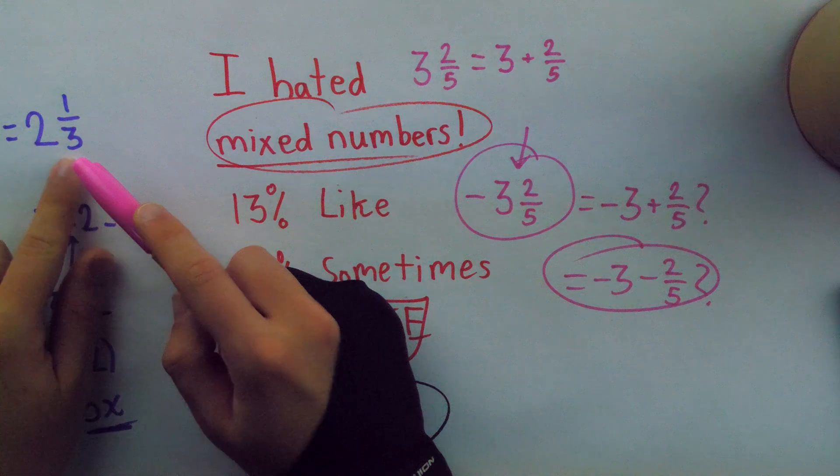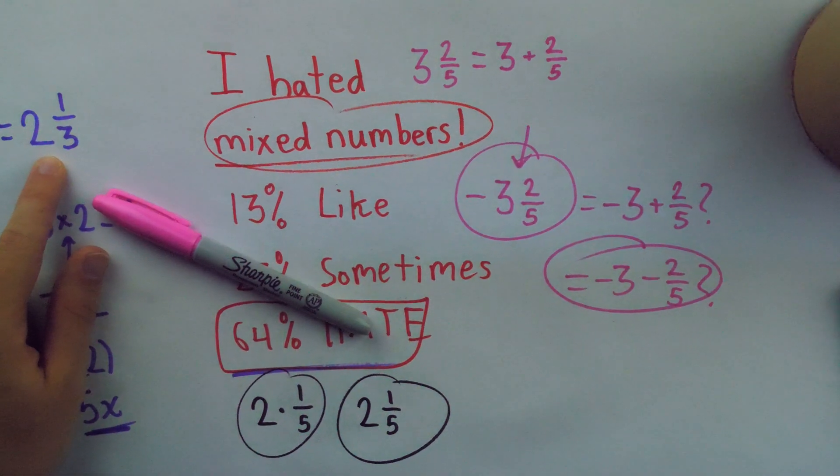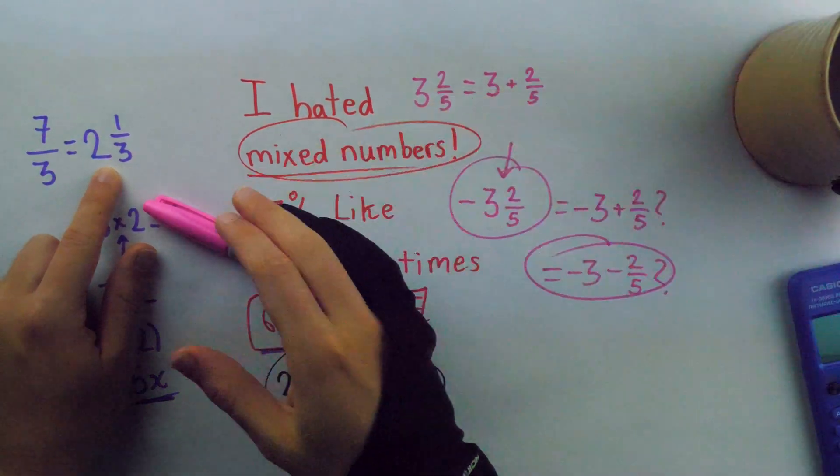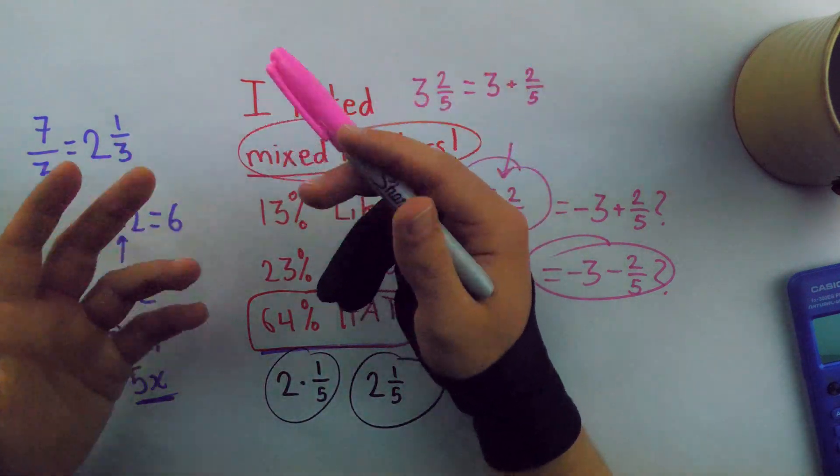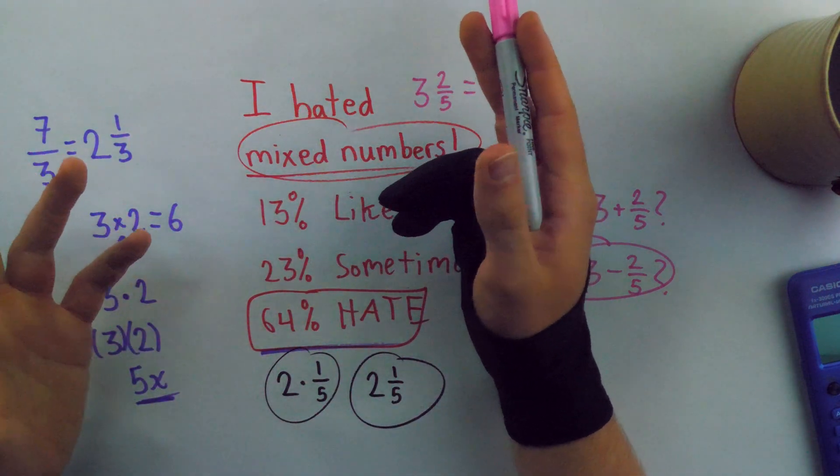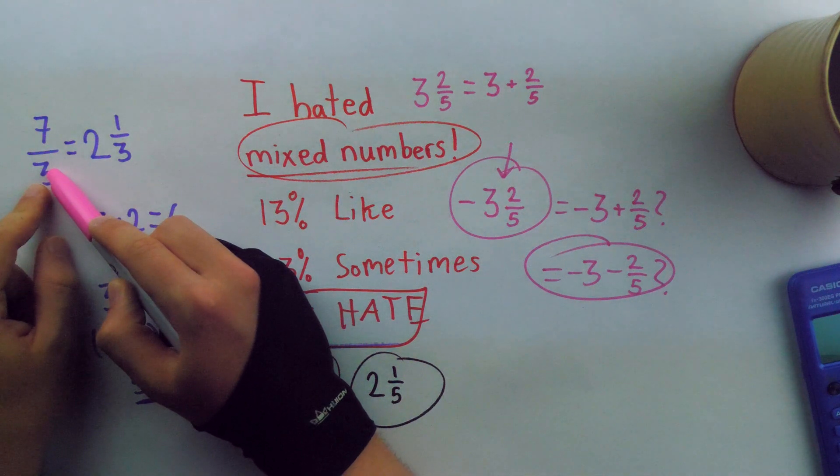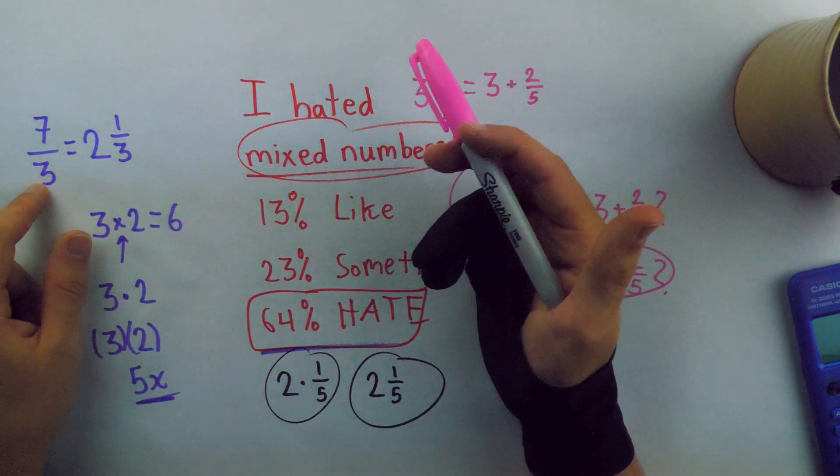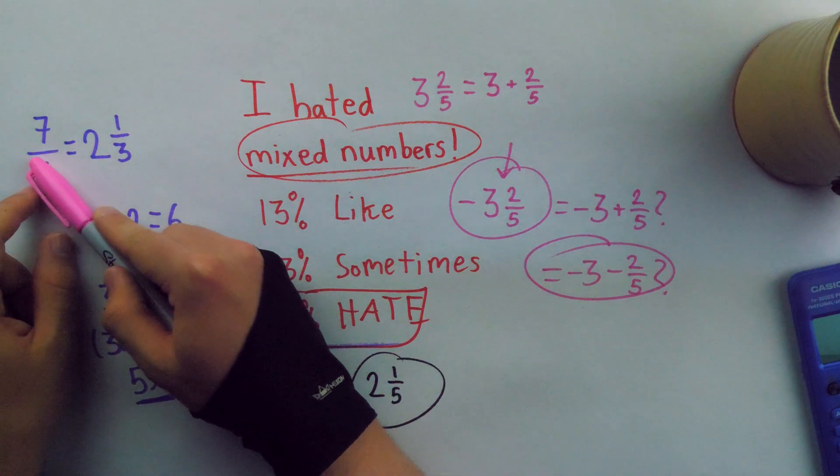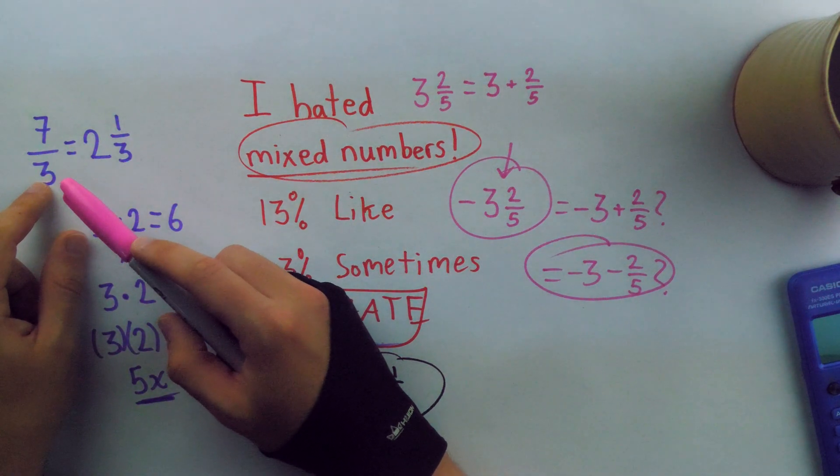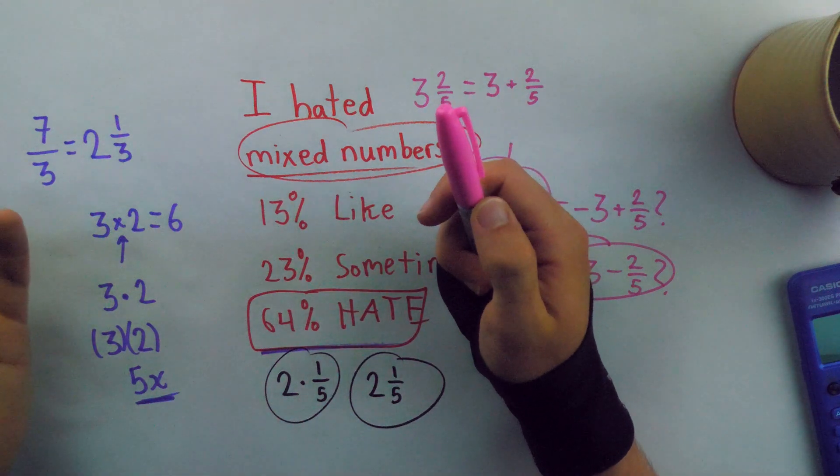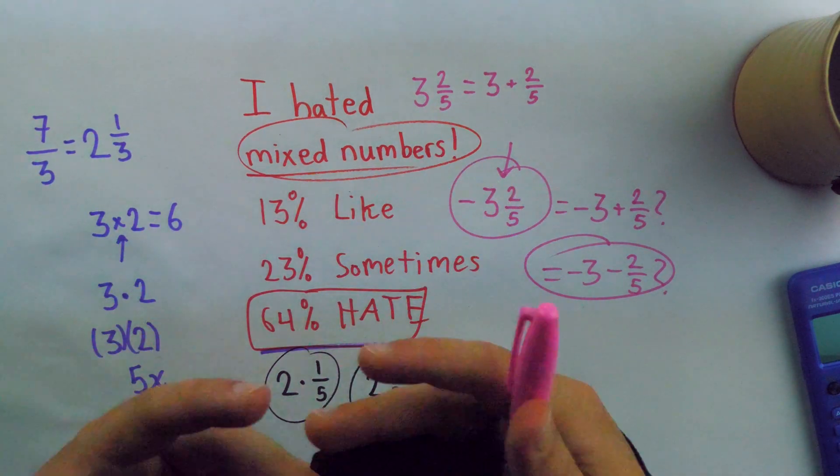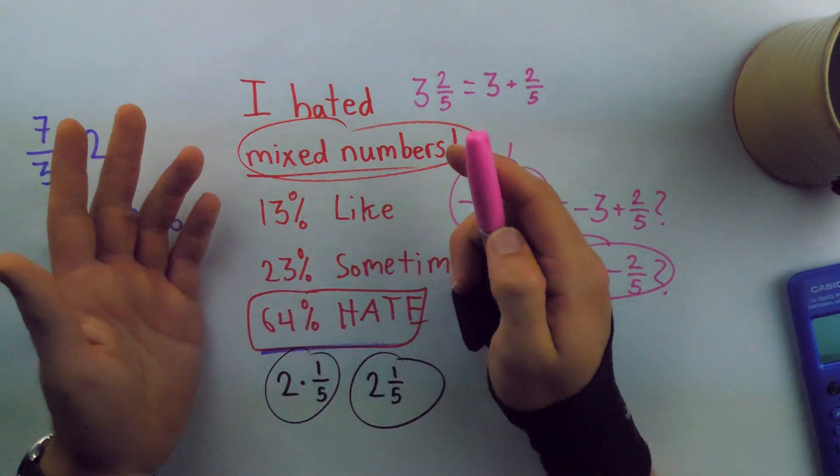For example, looking back over here, when I see the mixed number two and one-third, I immediately know how big this is. It's two wholes and one-third. It's two and a little bit. It's 2.3 repeating. That's nice. On the other hand, if I look at seven-thirds, I mean, those numbers are small and I do a lot of math, so this means just as much to me as this. But not everybody's like that.